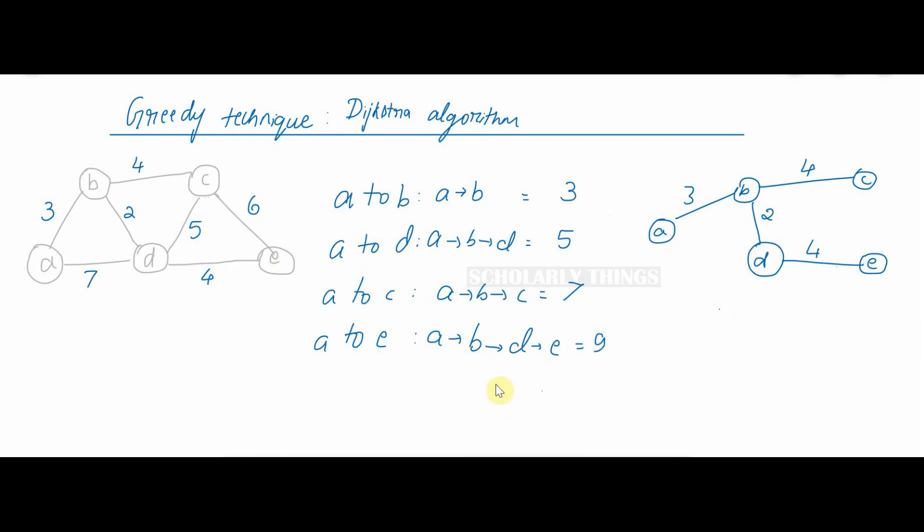So this was an application of Dijkstra algorithm. To summarize, the Dijkstra algorithm finds the shortest path from the source to a vertex nearest to it, then to a second nearest, and so on. This algorithm is applicable to undirected and directed graphs with non-negative weights only.